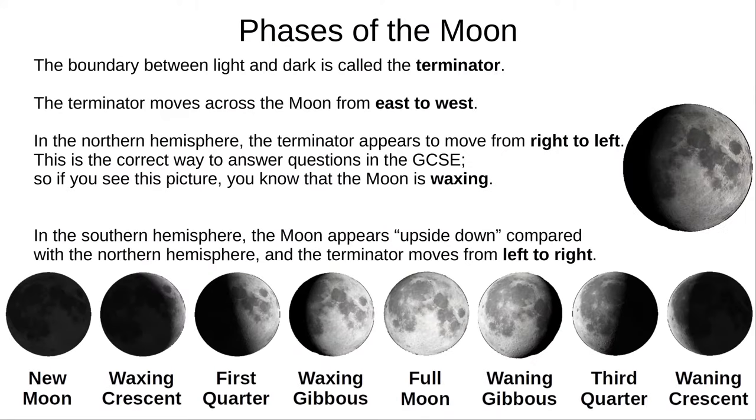The boundary between the light and dark sides of the Moon is called the Terminator. This is true for any planet or Moon. On the Moon, just like almost every planet and Moon in our solar system, the Terminator moves across the surface from east to west. From the Earth's northern hemisphere, it appears to move from right to left.